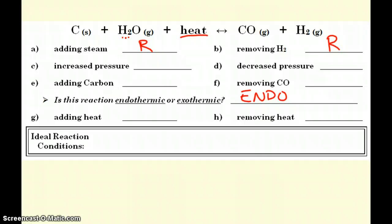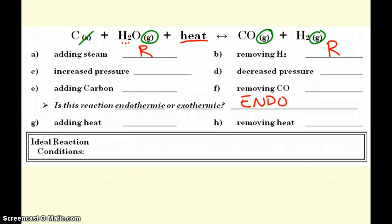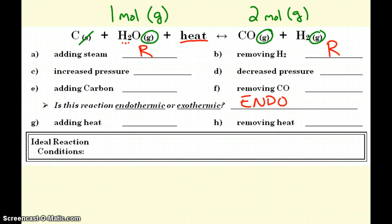Pressure check. Carbon is a solid, not involved. Steam is a gas. Carbon monoxide and hydrogen are gases. So both sides have gases — but which one has more? Over here on the reactant side, I have one mole of gas. Over here on the product side, I have one plus one — two moles of gas. So there's going to be more of an effect with the pressure on the product side, so I put my P over there. When I increase the pressure, it's going to send it back to the left. Whereas decreasing the pressure will cause the reaction to shift to the right to replace it.